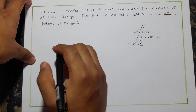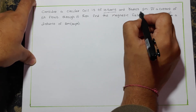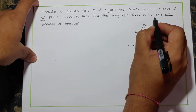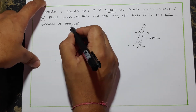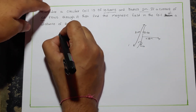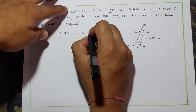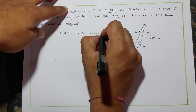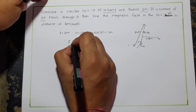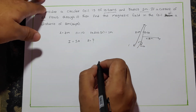Let us solve an example. Consider a circular coil of 10 turns and radius 1 meter. If a current of 5 amperes flows through it, find the magnetic field at a distance of 2 meters — that is, the length of the coil is 2 meters. Given: L = 2 m, N = 10 turns, r = 1 m, I = 5 A. Find B.